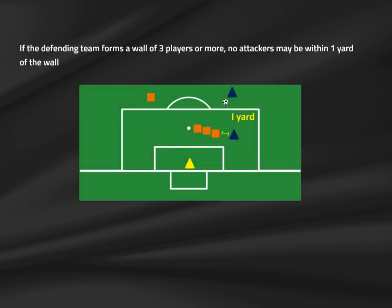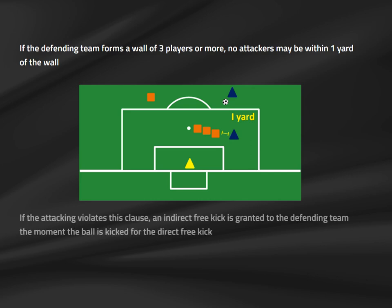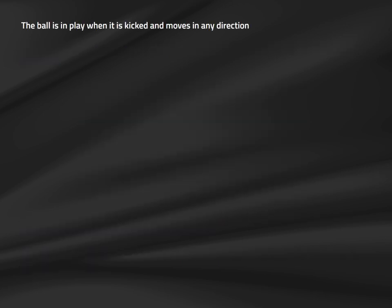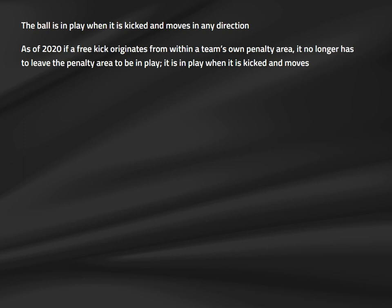If a defensive team forms a wall of at least three players, the attacking team is not permitted to have any players within one yard of that wall. If the referee notes an attacker standing closer, the attacker should be warned that doing so will result in a free kick being awarded to the defending team. This warning should be issued prior to the taking of the free kick and should result in the free kick becoming ceremonial. The ball is in play when it is kicked and moves in any direction — as with the 2020 goal kick change, the ball does not need to leave the penalty area from a defensive free kick.